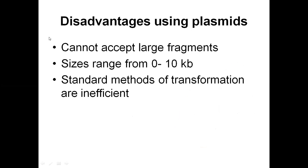The disadvantages of using plasmids are that they cannot accept large fragments. Plasmids can accept up to 100 base pairs to 10,000 base pairs of DNA fragments only, and standard methods of transformation are insufficient for larger inserts.